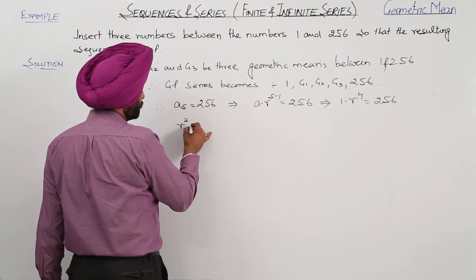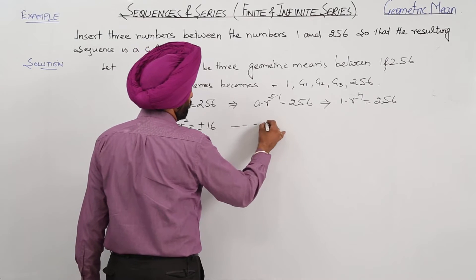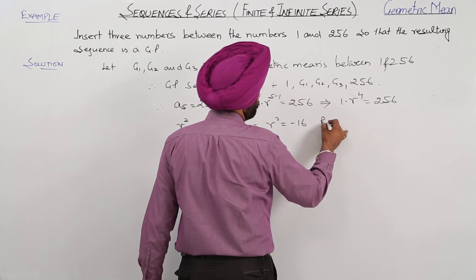Now what we can write is R squared is equal to plus minus 16, and R squared is equal to negative 16 will be rejected.